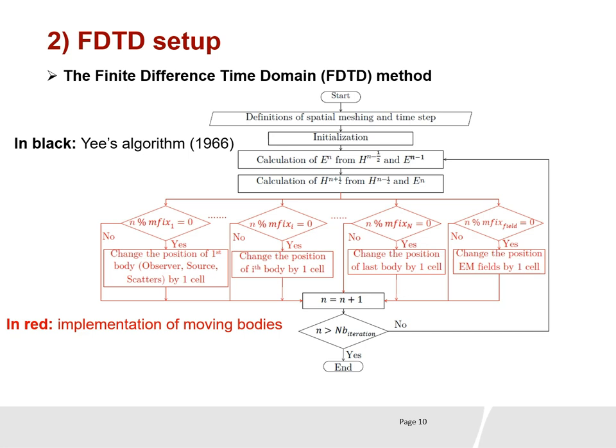This is the FDTD algorithm flowchart that we use to analyze motion. The black curve shows the Yee algorithm invented in 1966. The red curves show how we implement motion in FDTD. We can move different structures — observers, sources, and scatterers — at different speeds, and we can also move electromagnetic fields themselves. As shown in the flowchart, the motion is implemented by changing the positions of objects directly inside the time loop.